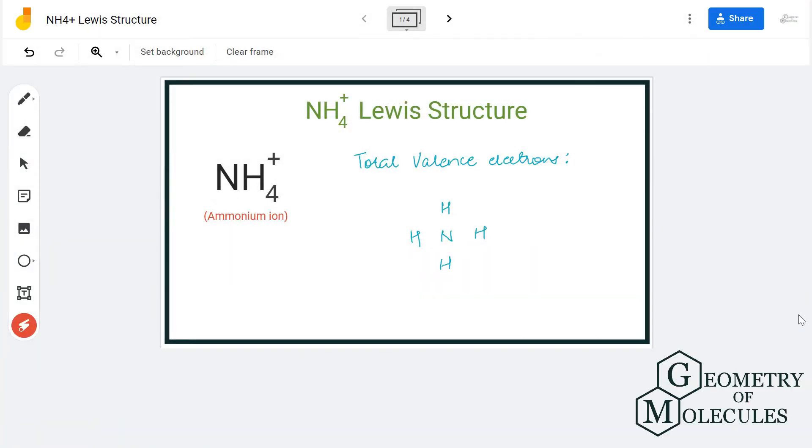Hi guys, today in this video we are going to look at the Lewis structure for ammonium ion. It is written as NH4+. The plus charge here means it has a positive charge, as it is giving away one electron. To know the Lewis structure of this ion, we will first look at its total number of valence electrons.